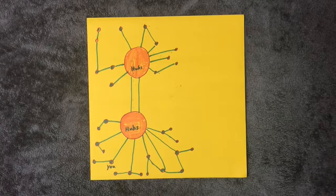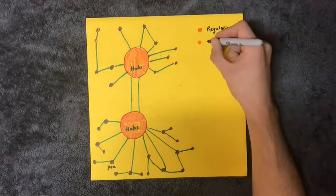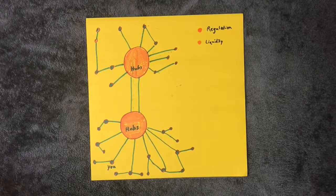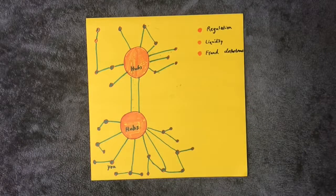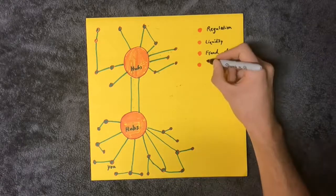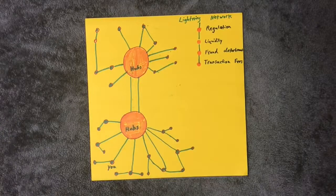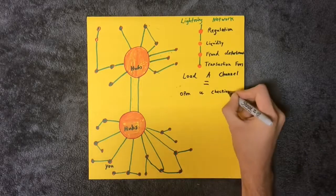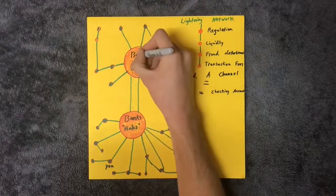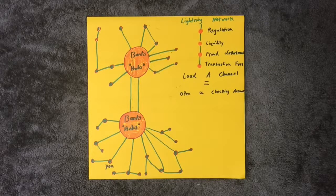So the Lightning hubs will require to be set up for financial regulation and reporting laws, require massive amounts of liquidity to keep multiple well-funded open channels, offer fraud departments to watch the blockchain constantly and prevent theft, all while taking small fees for every transaction you route through them. Does this system sound familiar? Just replace the term 'open channel' with 'checking account.' These Lightning Network hubs will be ran by the same financial institutions the Bitcoin was made to challenge.